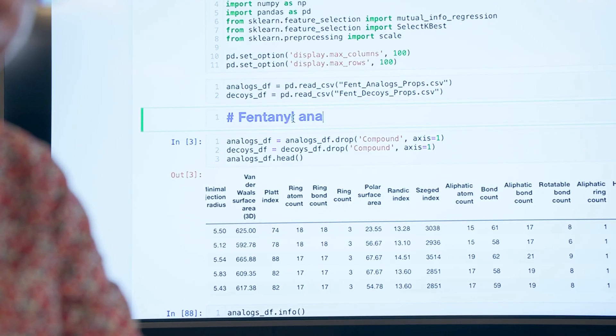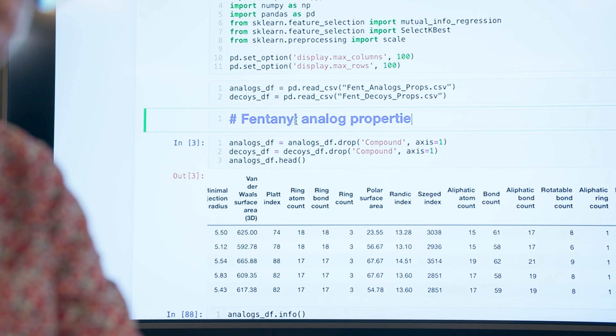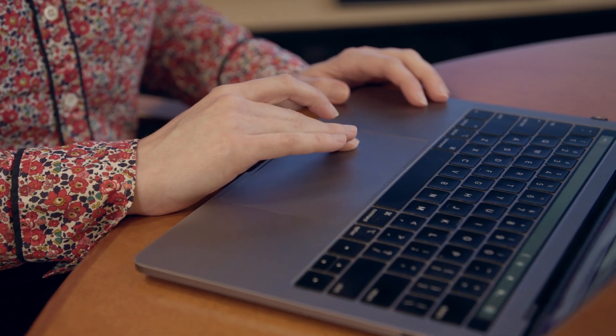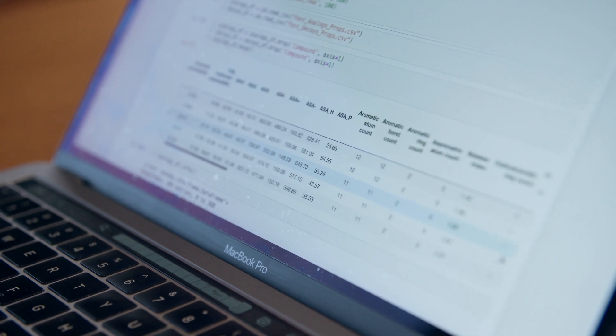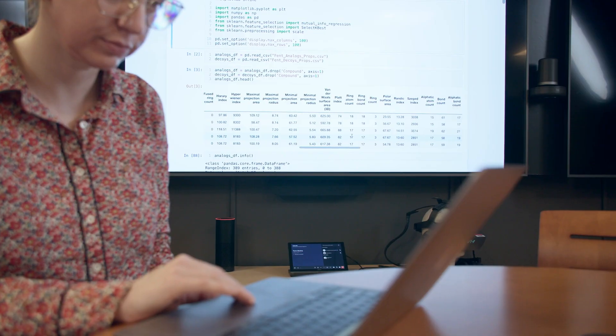For example, a forensic scientist could ask the model to imagine new types of fentanyl that are easy to make or highly lethal. The knowledge of the drug's use and how it can be made narrows the search from many billions of possibilities to one billion.